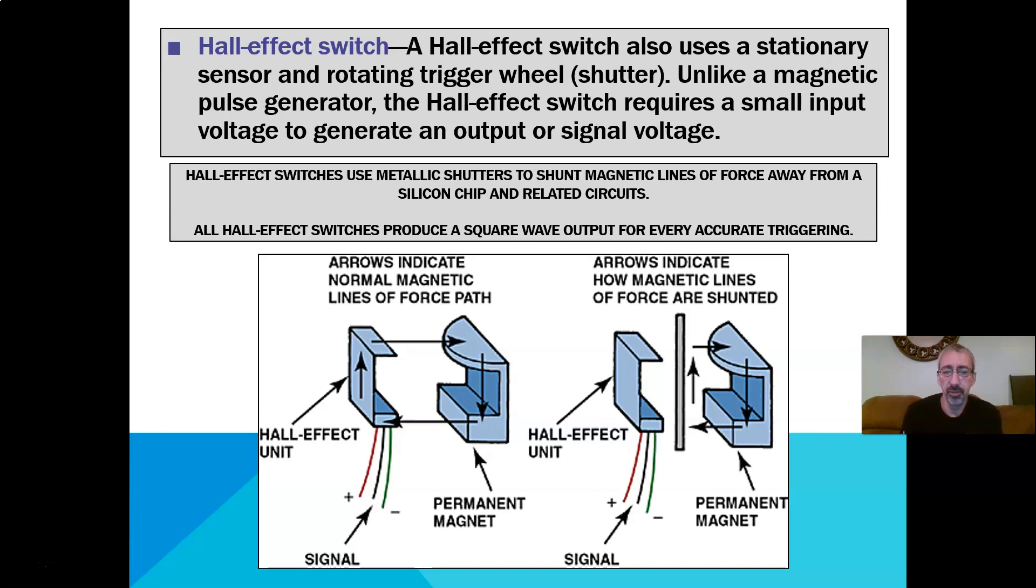We have a shutter. You'll see the Hall effect unit, the permanent magnet, and then you'll have a shutter that will break the signal across it. When it breaks the signal, it blocks the voltage that's being sent across it and we get our signal.